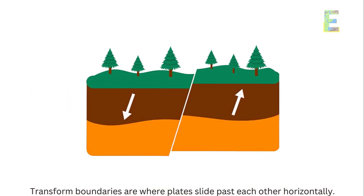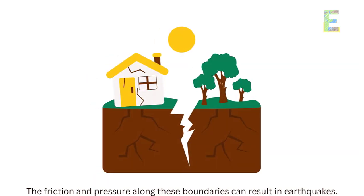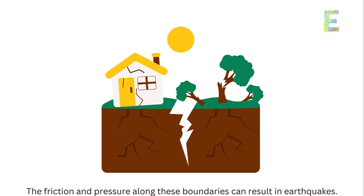Transform boundaries. Transform boundaries are where plates slide past each other horizontally. The friction and pressure along these boundaries can result in earthquakes.